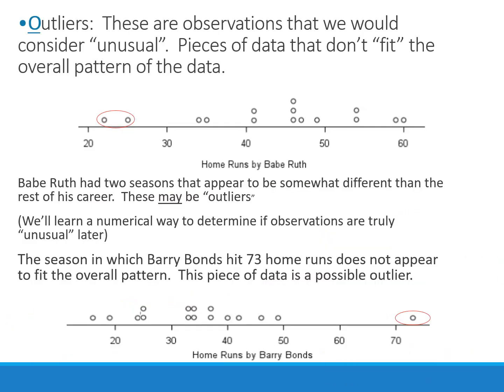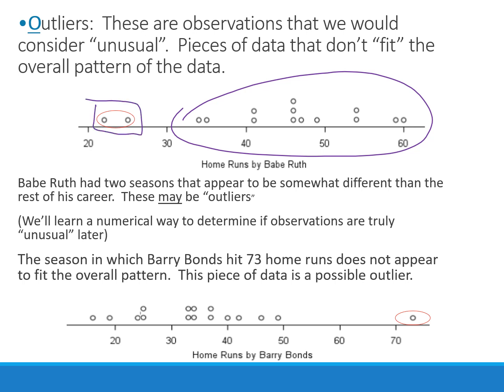The O in SOCS is for outliers — observations we would consider unusual or pieces that don't fit with the rest of the pattern. Eventually we'll be able to use a mathematical way to identify outliers, but for now we just pick them out visually. Looking at Babe Ruth's data, his home runs are mainly centered around a certain stretch of numbers, with two low seasons in the low to mid twenties that may be outliers. If we looked at Barry Bonds instead, we see one season where he hit a very high number of home runs compared to all the others.